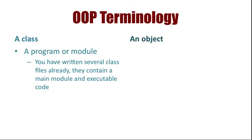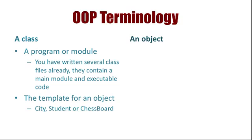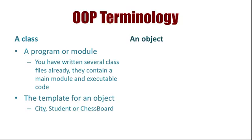We've already used the term class to refer to the file you create when you're writing a Java program. The term class can also be used to describe the template for an object, such as a city, student, or chessboard. An object is then an instance of a class. Game 3, for example, might be an instance of a chessboard.